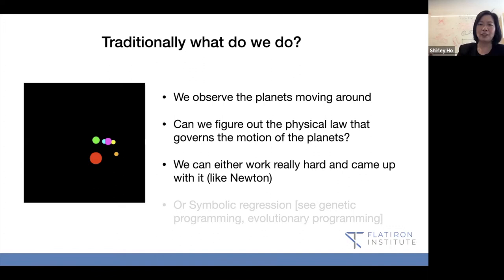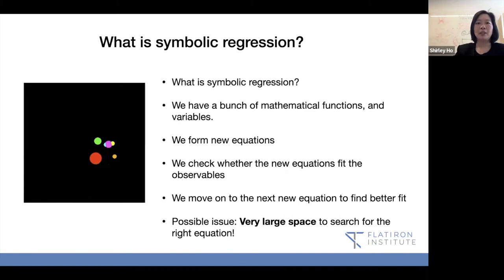We can either work super hard and be super lucky and probably rich and came up with it, right, in this case, like Newton and Gauss. I think super lucky is very important in this case too. Or we can do something a little bit, I guess, layman friendly. We use symbolic regression or like genetic programming or evolutionary programming.